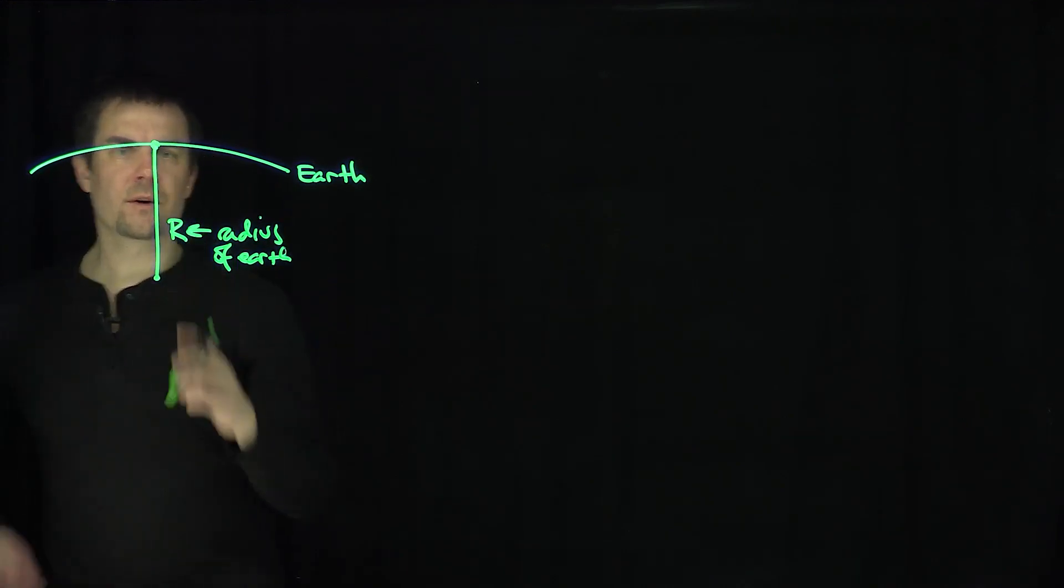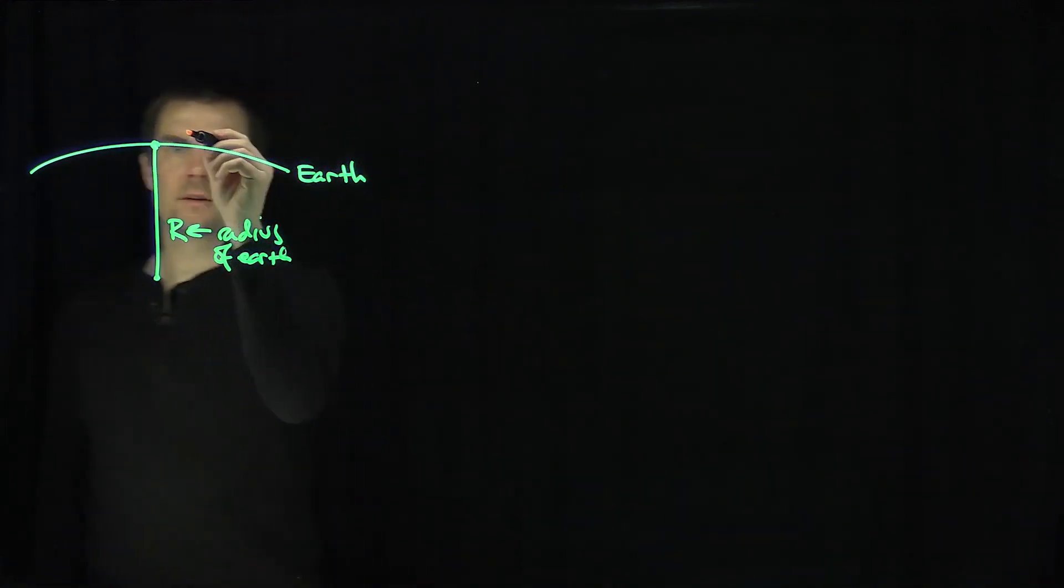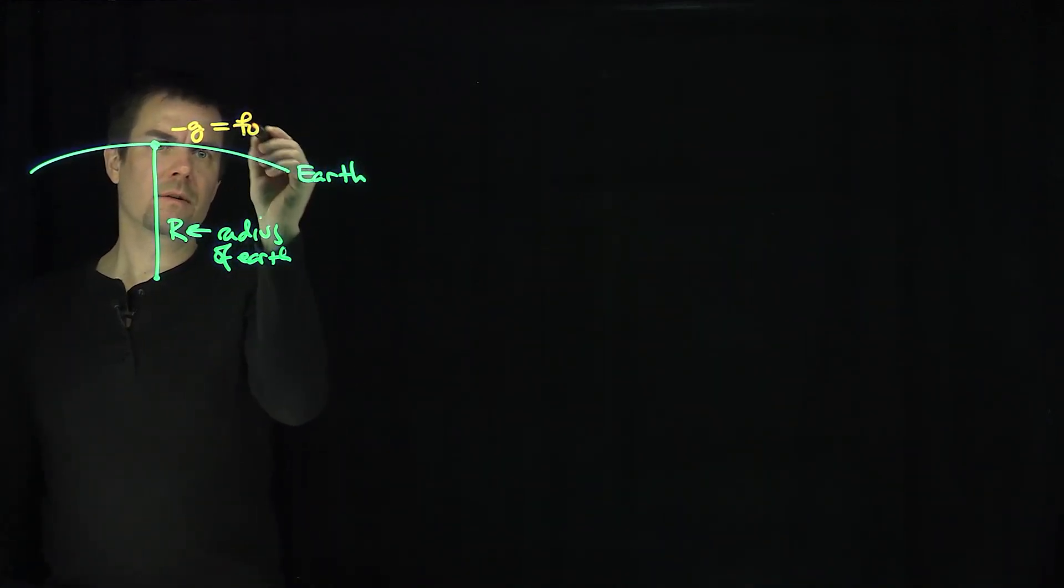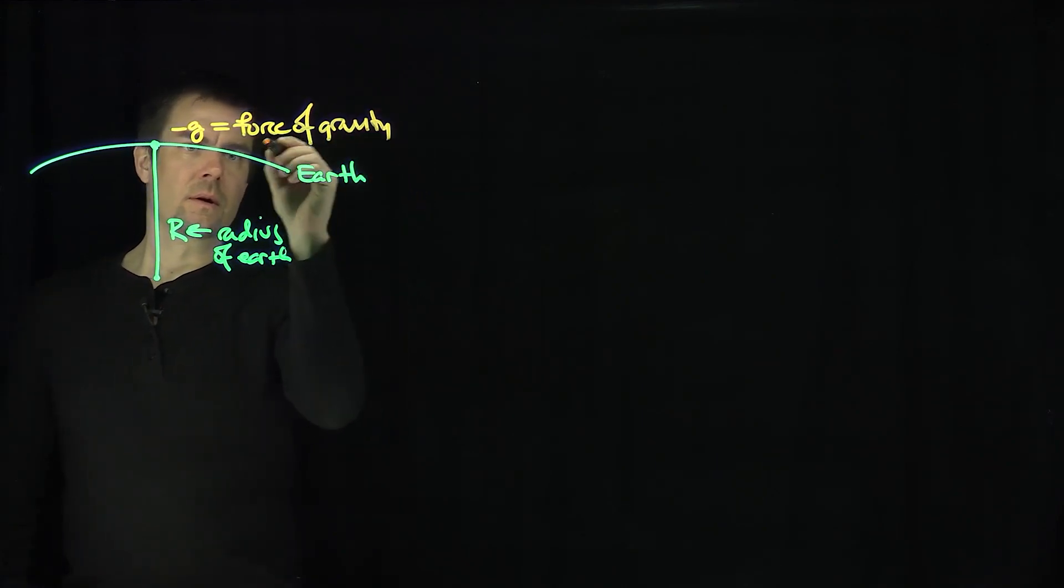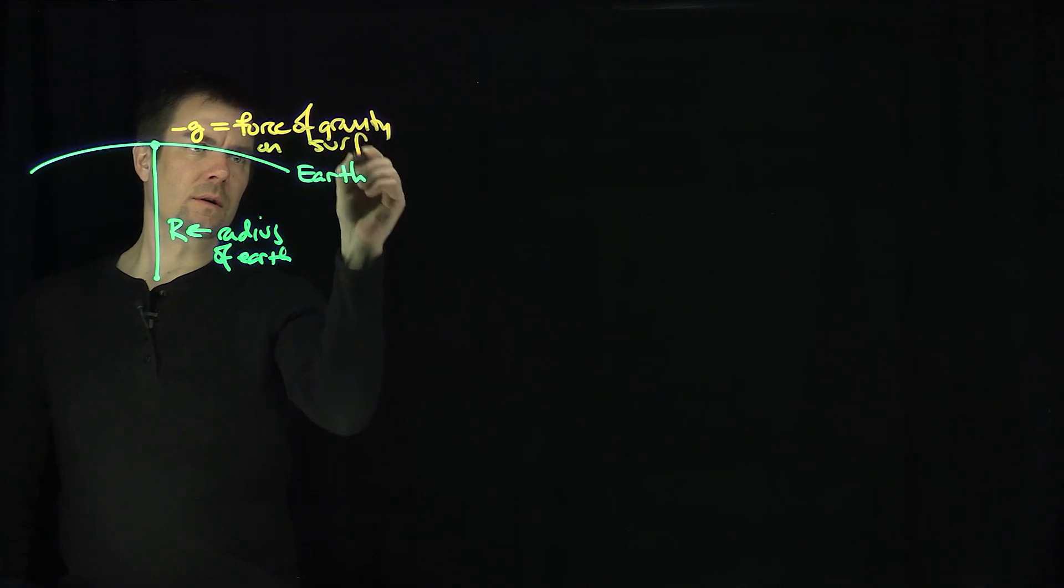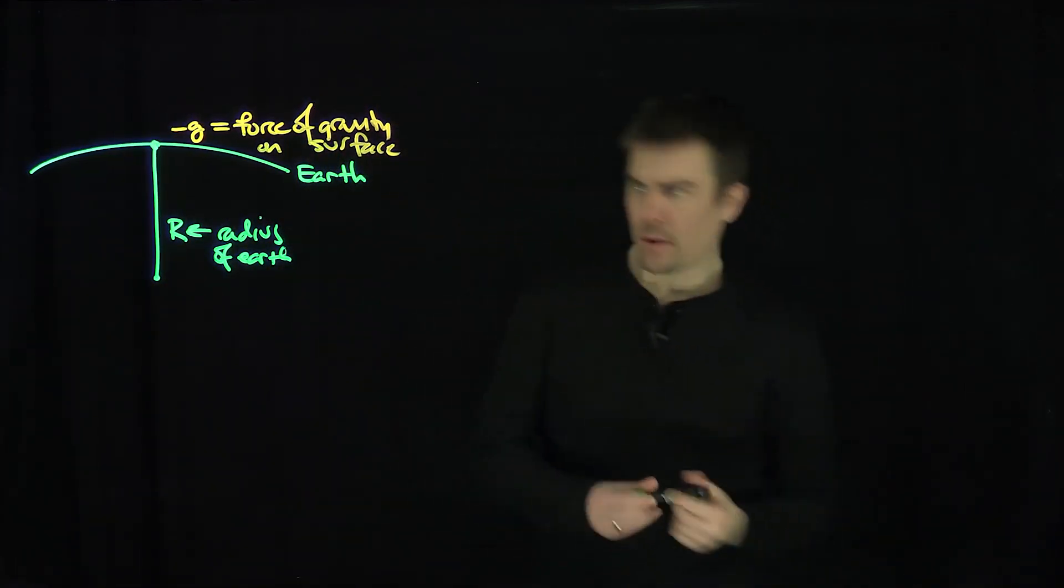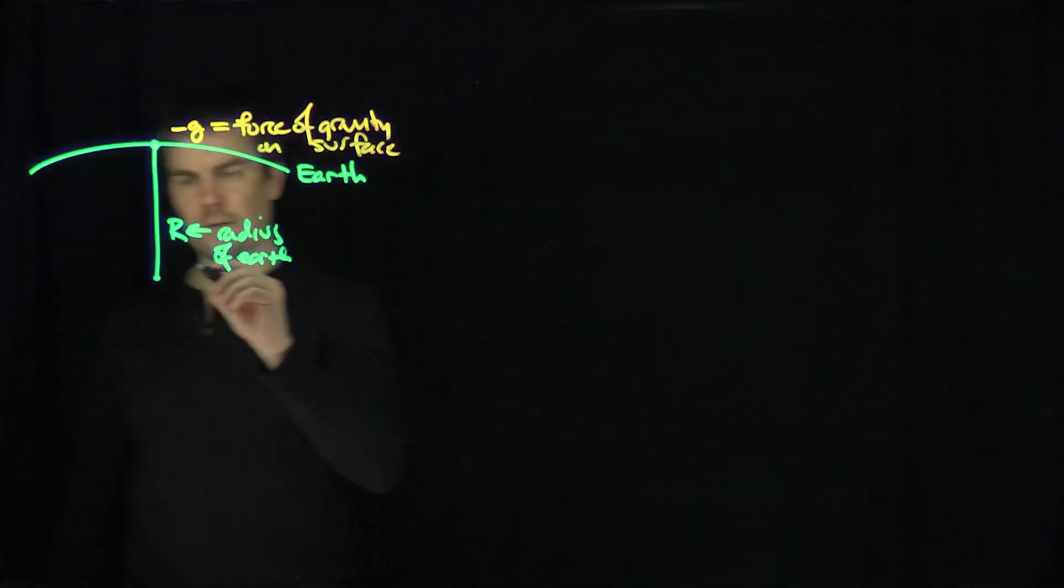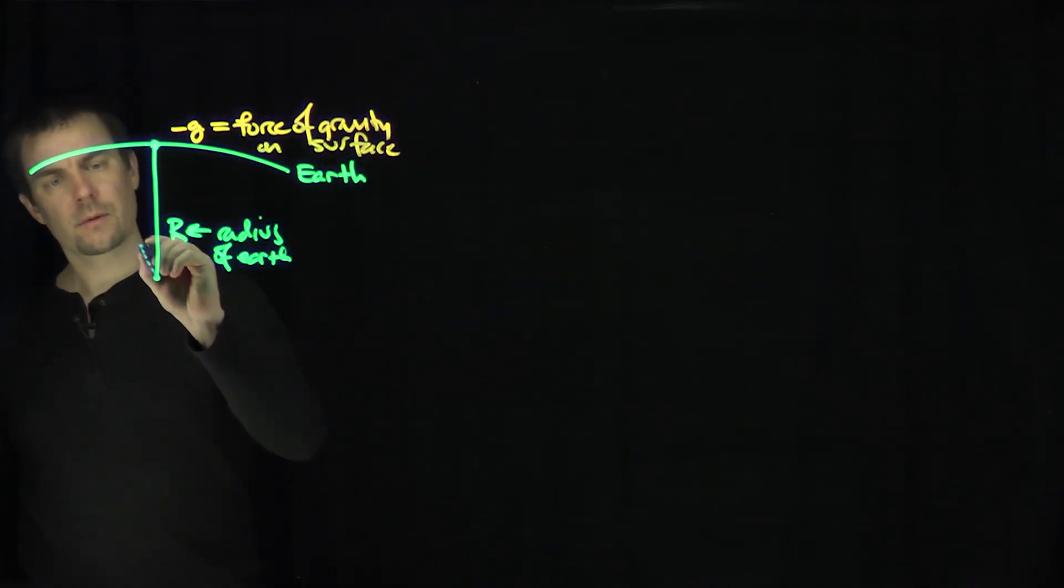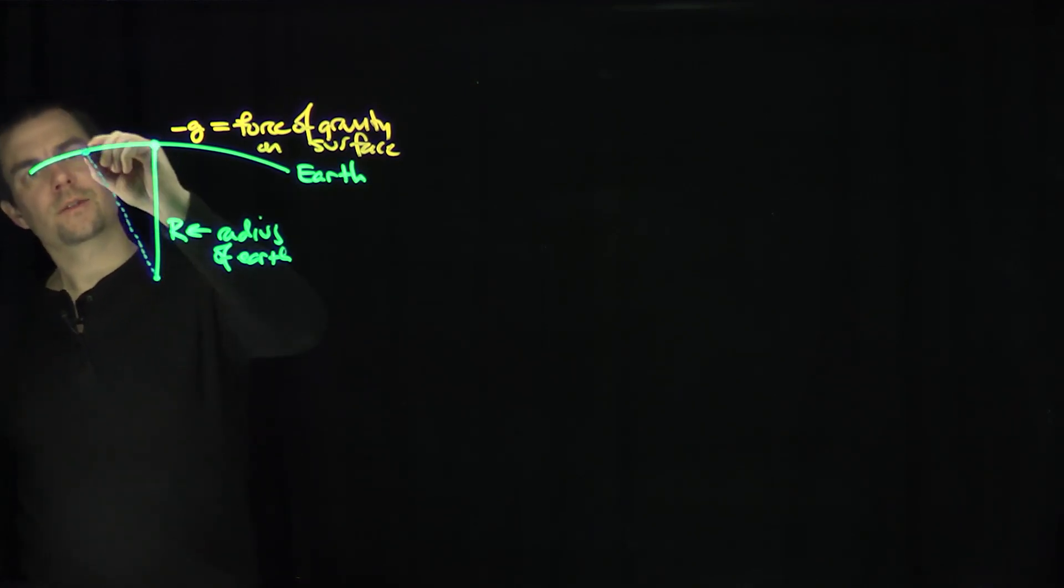We know that on the Earth's surface, the force of gravity is negative g on the surface, and then we have a rocket ship. A ship is going to take off from a certain point on the surface of Earth, and then it's going to go like this.